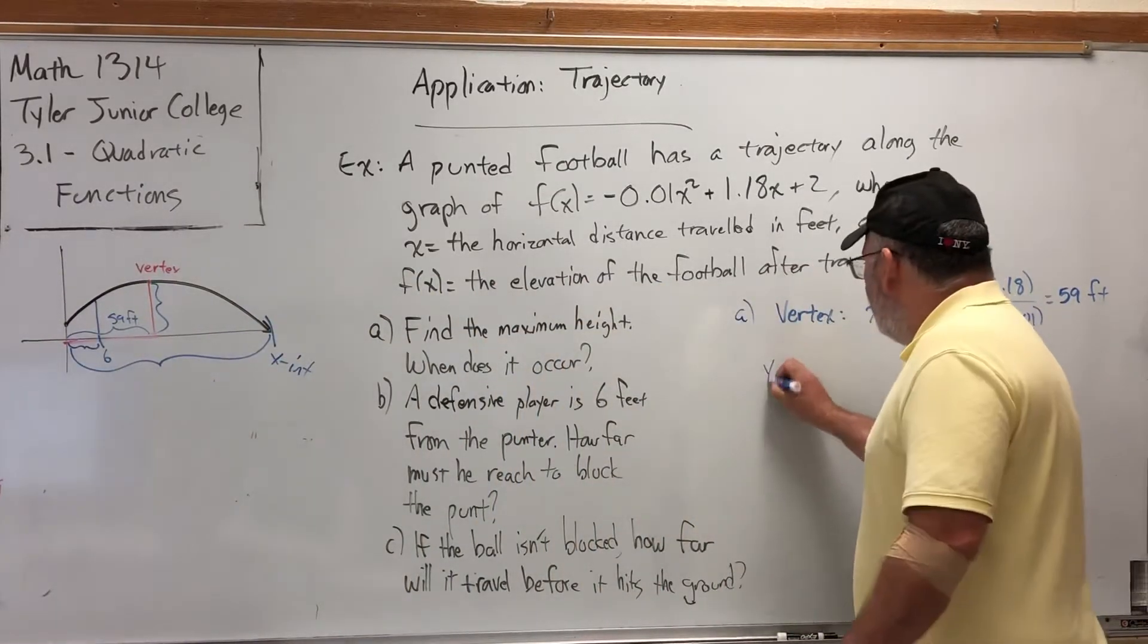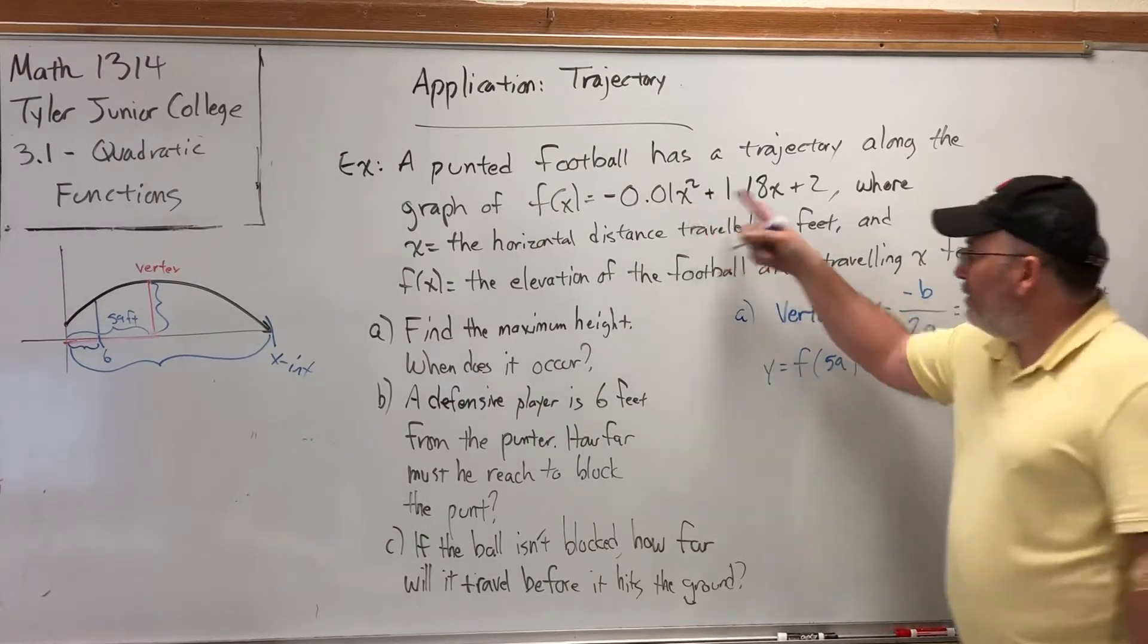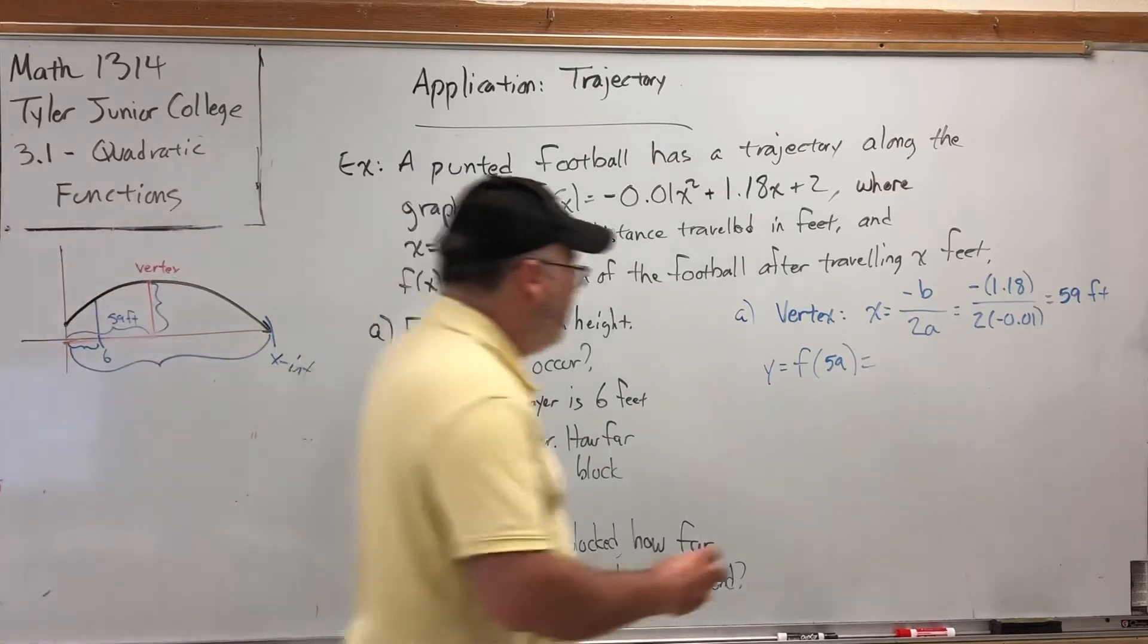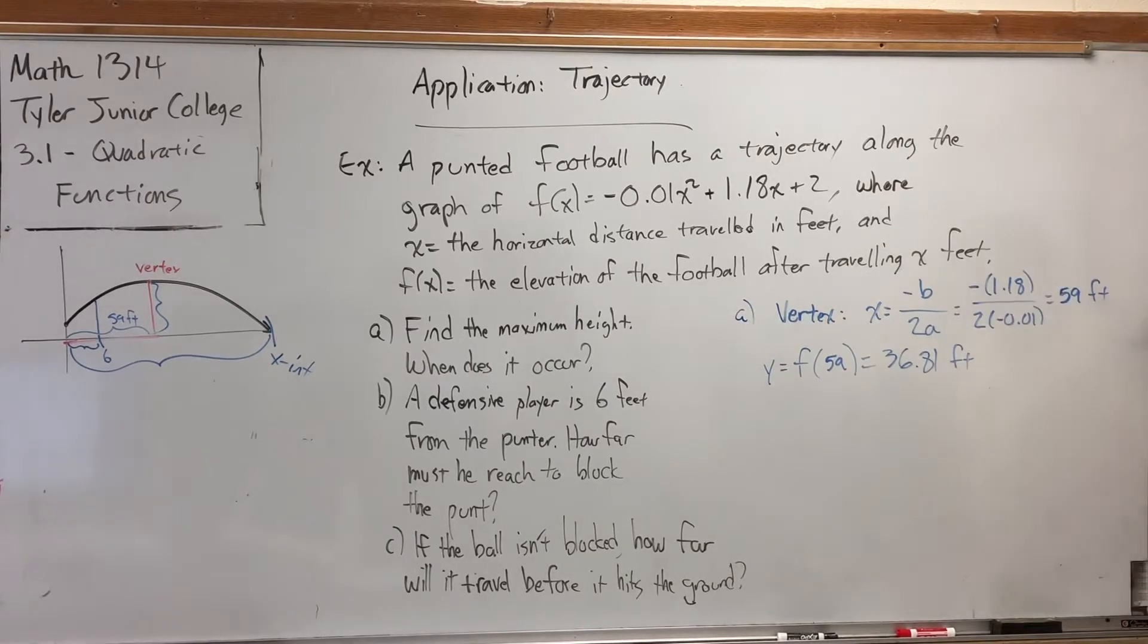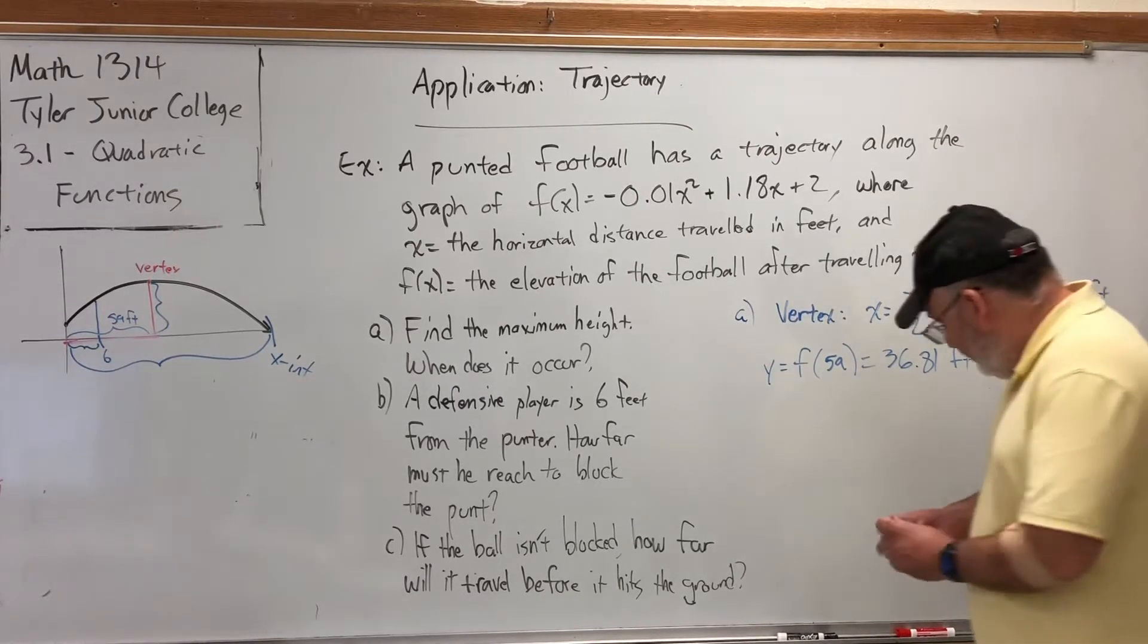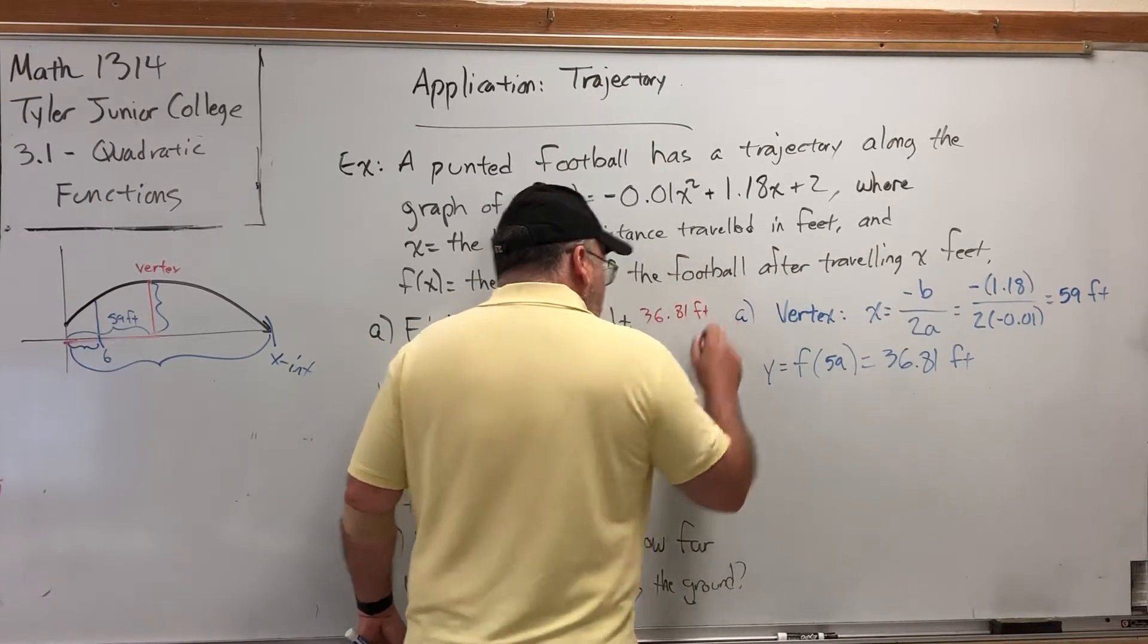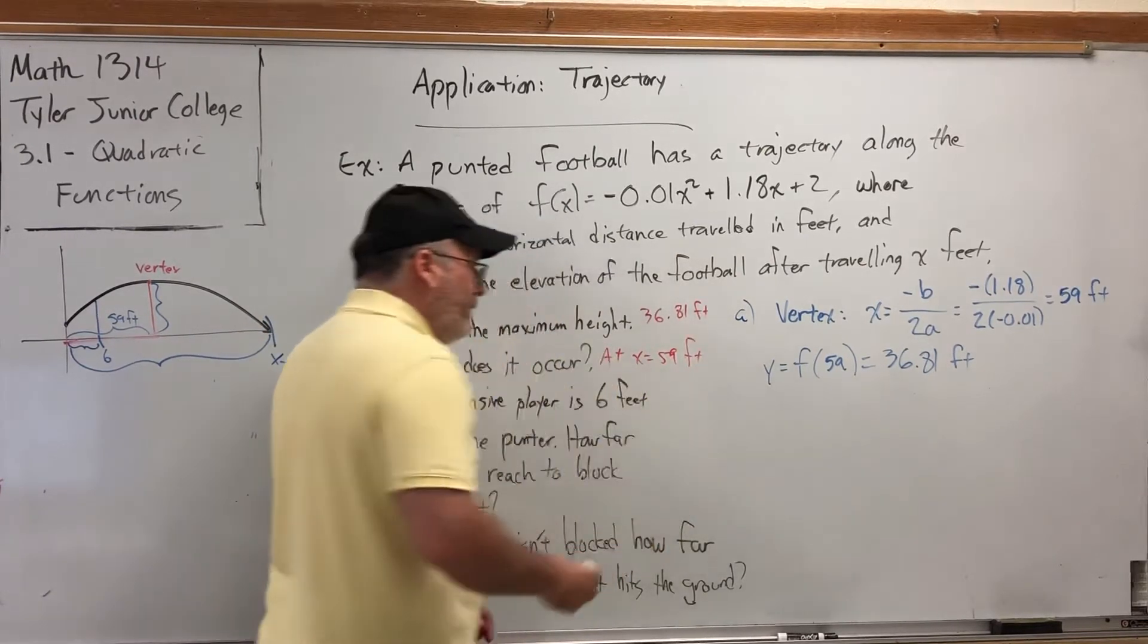But how high is that apex? Well, that's the y-coordinate. Y = f(59). Okay, this is just calculator work. Put the 59 here. Put the 59 here. Mash buttons on the calculator. I've already got the problem worked out, so I'll spare you the trouble. It's exactly 36.81. Again, saving a little bit of time in the video by saying, if you substitute 59 into the function, it will come out 36.81 feet. So the answers to the question, the maximum height is 36.81 feet, and it occurs at x = 59 feet. So it's traveling 59 feet when it reaches the height point.